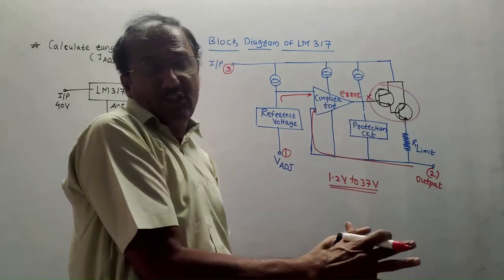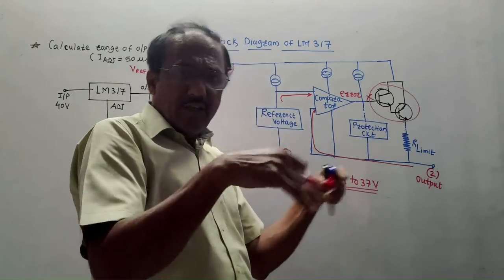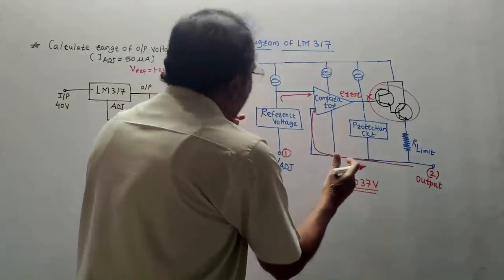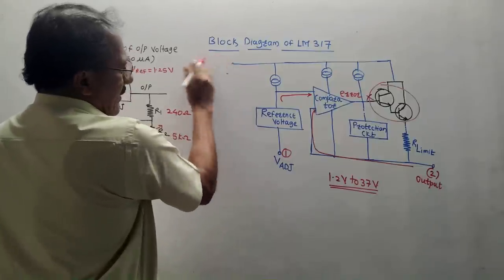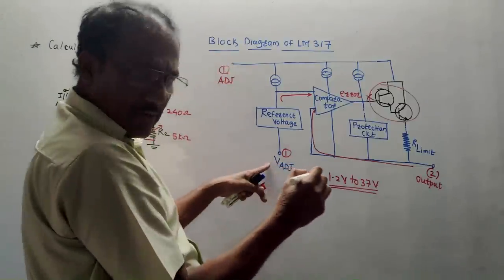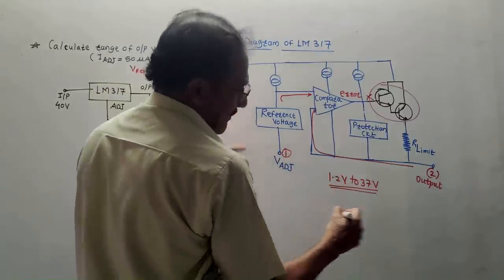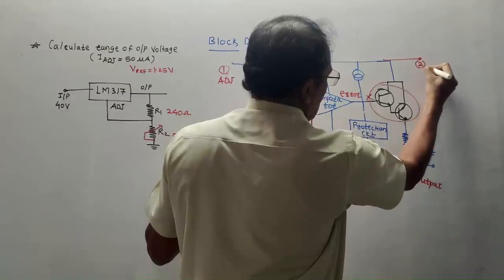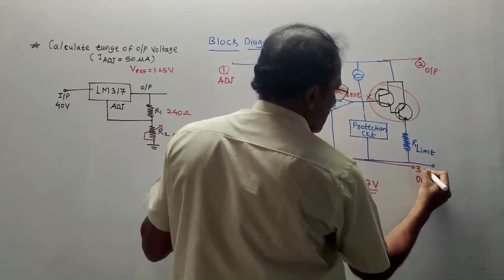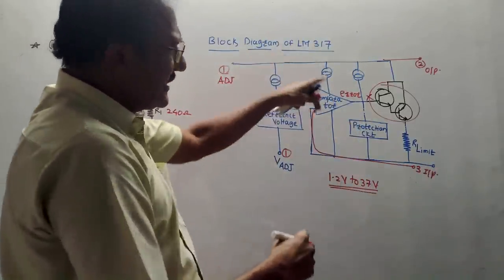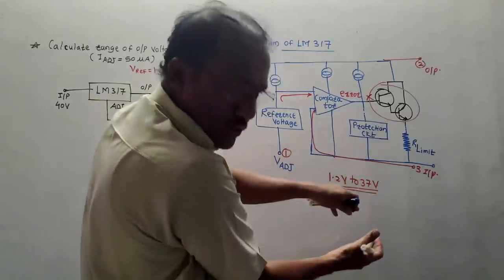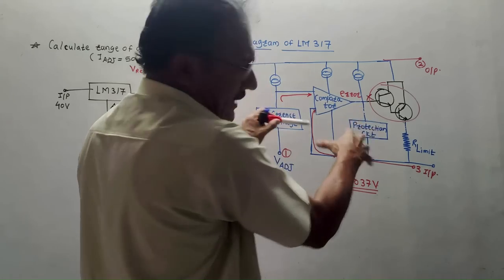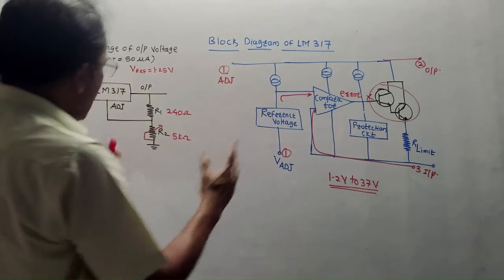This is for the positive voltage regulator. The same IC is used for negative voltage regulation. From an exam point of view, if the block diagram of the negative voltage regulator is asked, just use the same diagram and interchange the input and output terminals — terminal 1 is adjustable, terminal 2 is output, terminal 3 is input. Make those changes in the diagram accordingly. Usually positive voltage regulators are applicable in common appliances. Now let us solve the numerical.